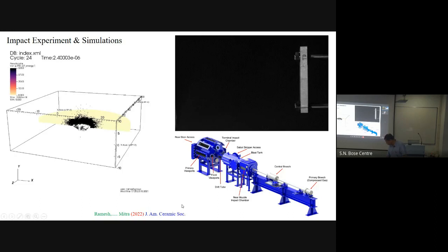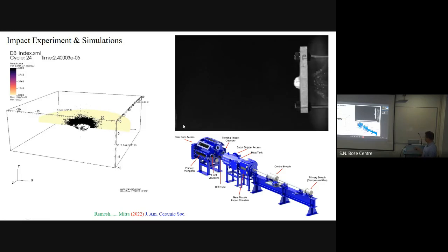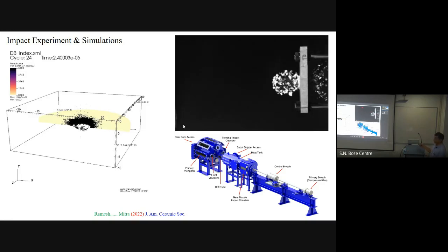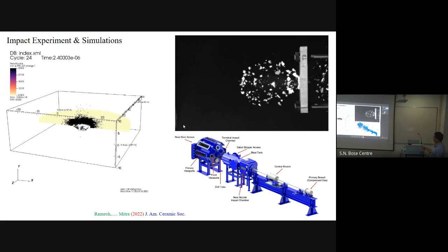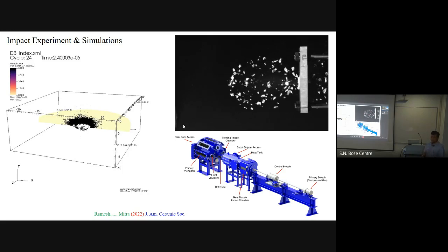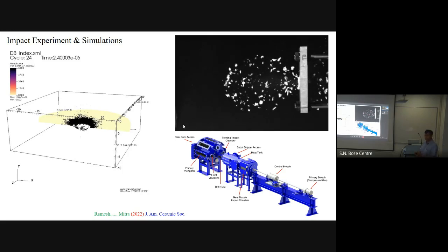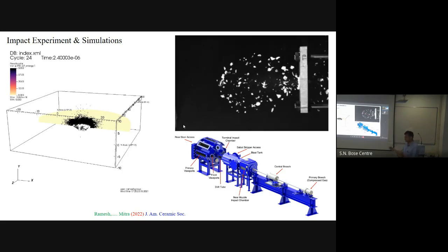Here's a small movie — recorded at 100 million frames per second. You can see the projectile hitting the target and the ejecta cloud coming out. We can track each and every particle being emitted: their shape, velocity direction, and so on.